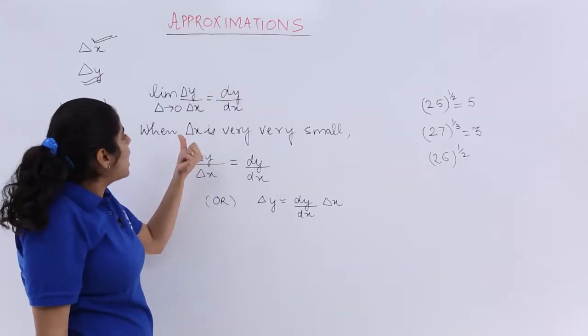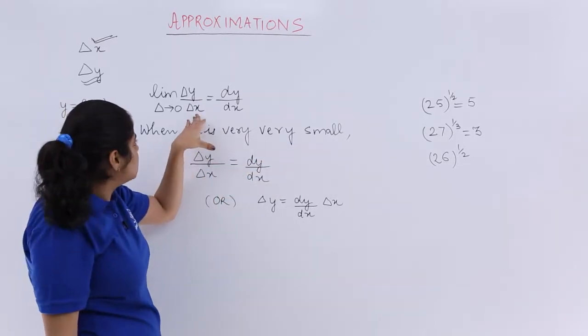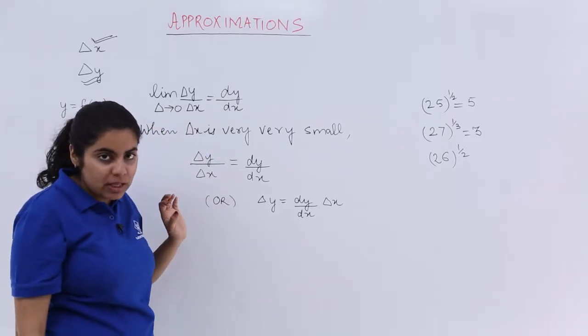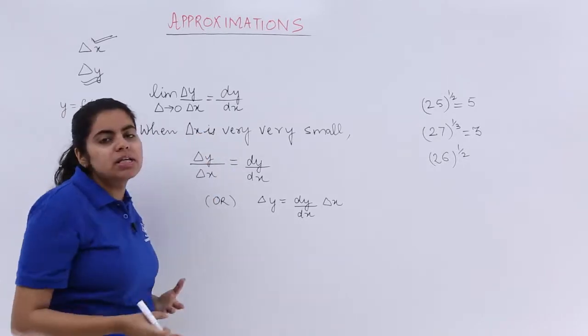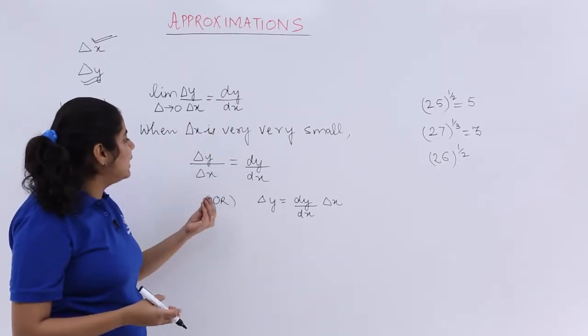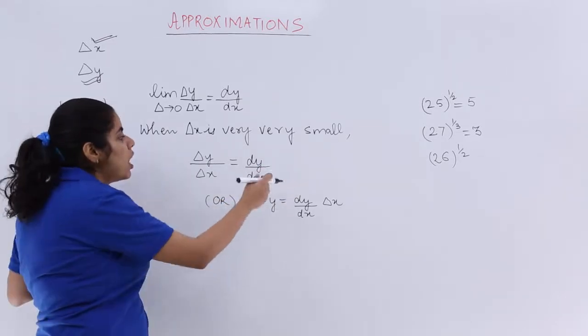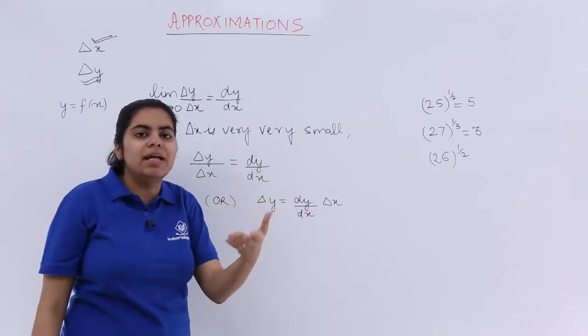That means if del x is very very small - you can write here del x in some books - then what happens? If the small change in x is very small, you can directly say del y upon del x is equal to dy upon dx, because it is nothing but the change in y with respect to x, and here it becomes the derivative.